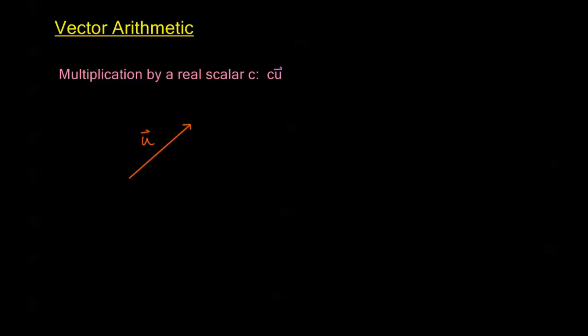And if I drew a vector that was in the same direction as u, but the distance was only one half of the way of what u did, we would call this one half u. In other words, I'm multiplying the vector by the real scalar one half, and what I get is a vector that goes in the same direction as u, but the magnitude is only half of what the magnitude of u was.